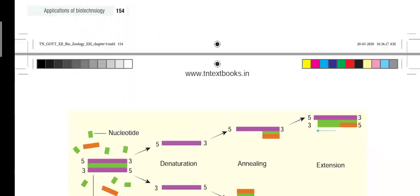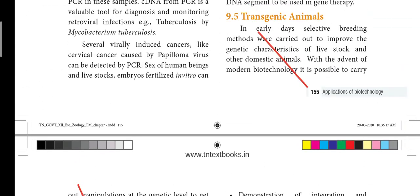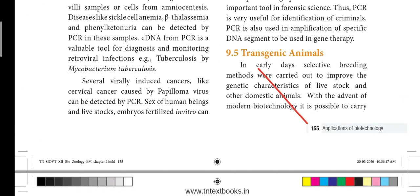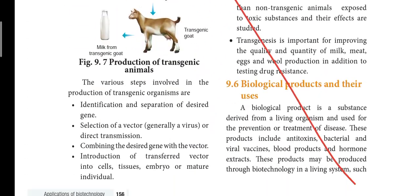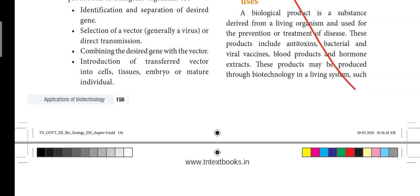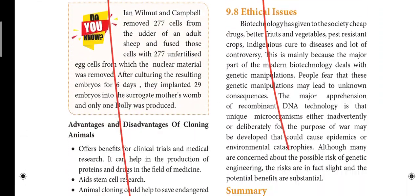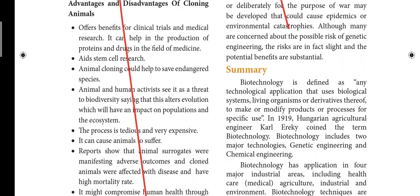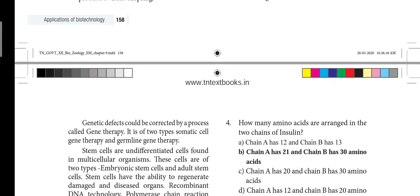Next is the 9th lesson — Applications of Biotechnology. Page number 155, heading 9.5 — Transgenic Animals — that heading is struck out. Next pages 156, 157, 158 are full strikeout.